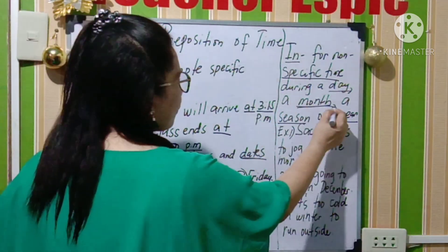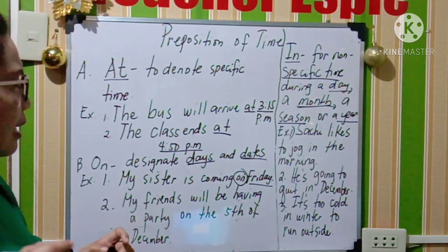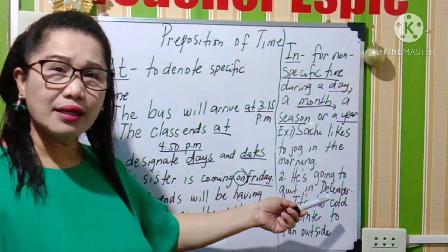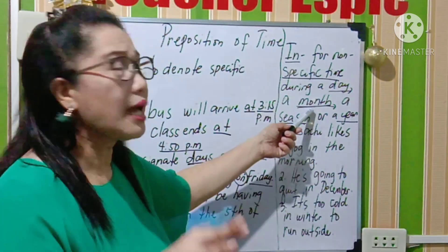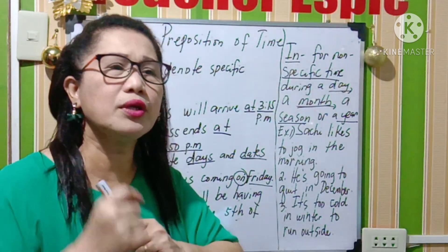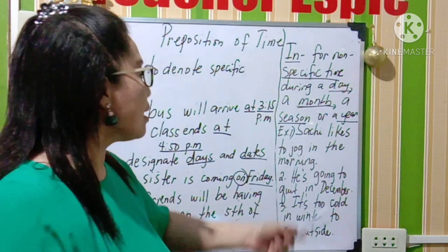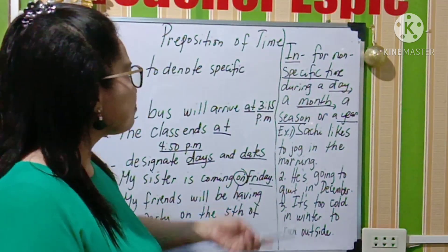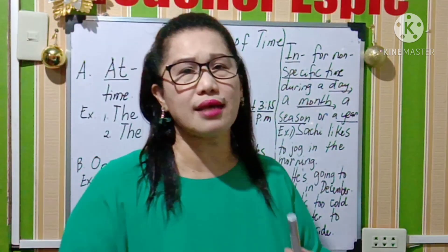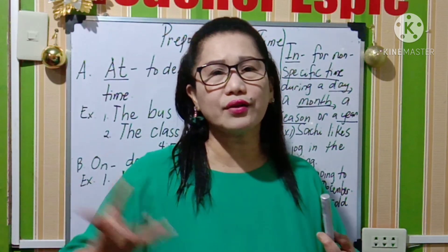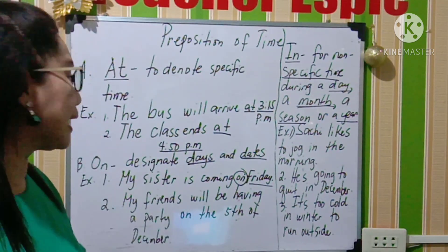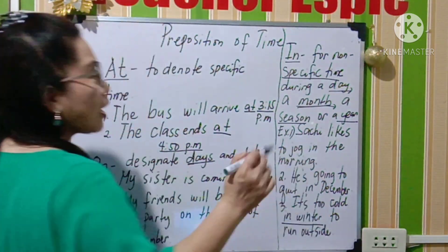When we are talking about a month, wala siyang exact na day — month lang. So like for example, he's going to quit in December. So gumamit tayo ng in December — ang tawag doon is a month. Wala siyang specific, wala siyang exact day kung ano po yun — December 5 ba yun or December 6 or so on. Basta month of December. And then when we are talking about a season — ano po yung mga season dito sa Pilipinas? Diba, rainy day, sunny day. In other countries, we have winter, spring, like that. It's too cold in winter to run outside.